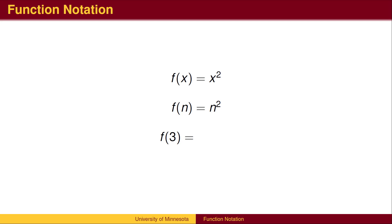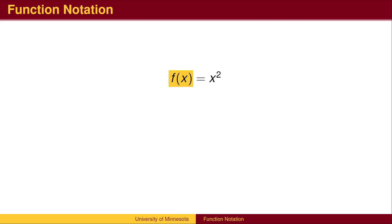The function squares the input, so f of 3 equals 9. To recap: some variable, like x, represents the input. f of x is the output corresponding to that input. The equation is the rule that tells us what is happening inside the function box. The letter f is the name of the function — in essence, f is the box.